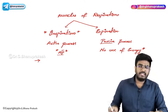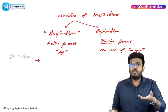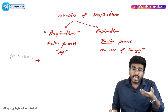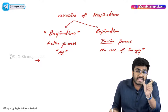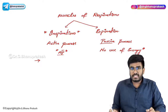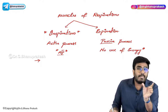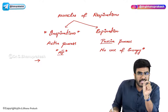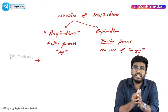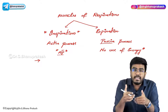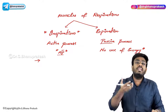During inspiration, ATP is getting utilized to bring air into the lungs. But where exactly is this ATP getting utilized — where is it broken down into ADP? It is during muscle contraction. During inspiration, certain muscles contract, and because of that muscle contraction, ATP is utilized to bring air into the lungs.